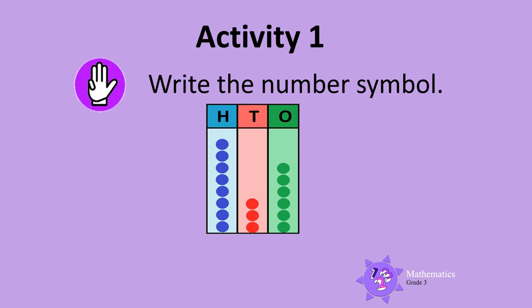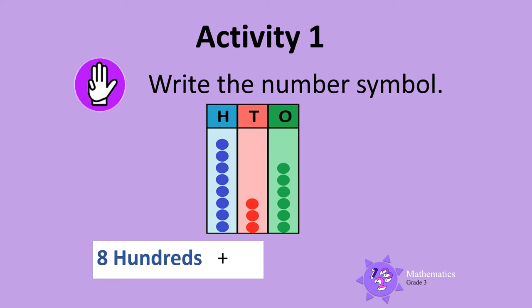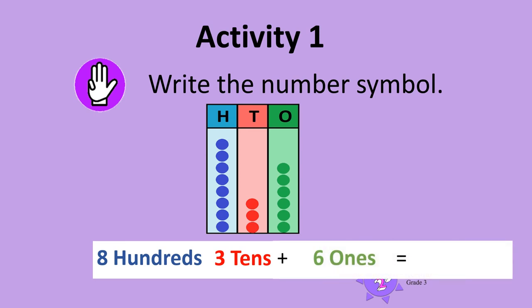Write the number symbols shown on this abacus. There are 8 counters in the hundreds column, so there are 8 hundreds. There are 3 counters in the tens column, so there are 3 tens. And there are 6 counters in the ones column, so there are 6 ones. So the number shown on the abacus is 836.